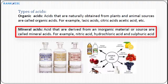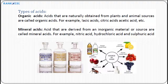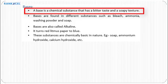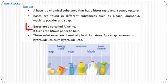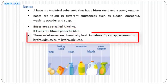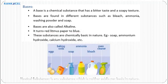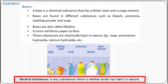Examples of mineral acids include nitric acid, hydrochloric acid, and sulfuric acid. A base is a chemical substance that has a bitter taste and a soapy texture. Bases are found in different substances such as bleach, ammonia, washing powder, and soap. Bases are also called alkaline substances. They turn red litmus paper to blue. Examples include soap, ammonium hydroxide, and calcium hydroxide.